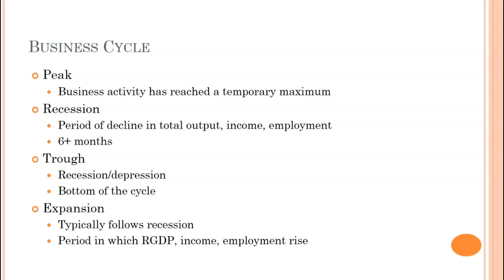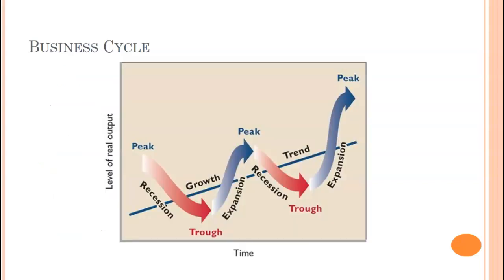There's a trough, which is where you hit the bottom. And then finally you get the expansion — the happy part — where everything's on the rise, with increasing real GDP, income, and employment. So we have peak, recession, trough, expansion — hence it's a cycle.